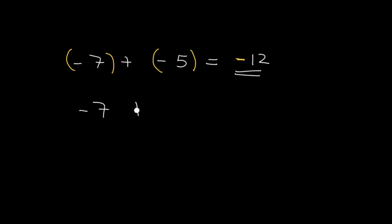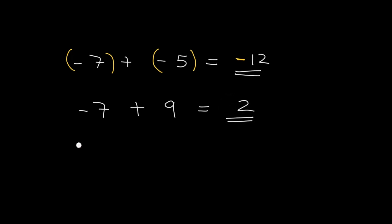Here is another problem. Let's solve negative 7 plus 9. Our answer will be positive 2. This is step 3. Here, 9 is farthest from 0, or we can simply take the sign of the bigger number. When we add a negative and a positive, we subtract and take the sign of the bigger number.